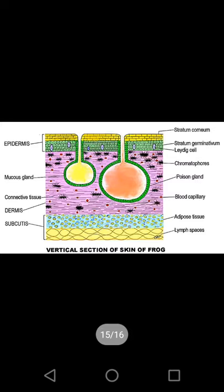Mucous glands in the dermis secrete mucin, keeping the skin moist and preventing desiccation or dehydration. Poison glands secrete a toxic substance that helps the organism fight against predators. These are some of the integumentary appendages seen in the frog.